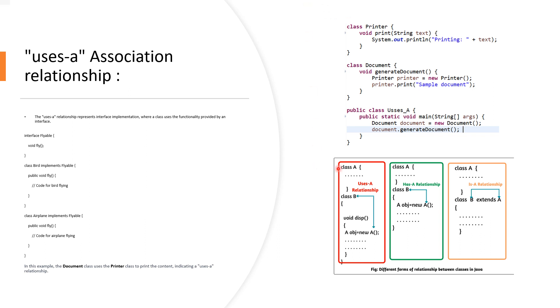The interviewer may ask, what is association or what is the uses-a relationship? The uses-a relationship signifies that one class uses the functionality of another class without being part of the state. In this example, the Document class uses the Printer class to print the content, indicating a uses-a relationship.